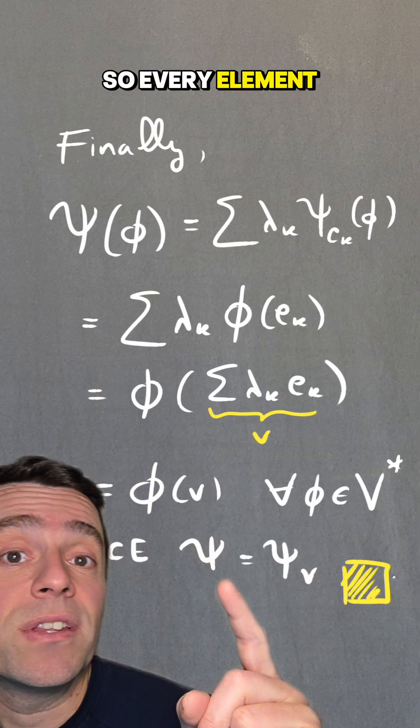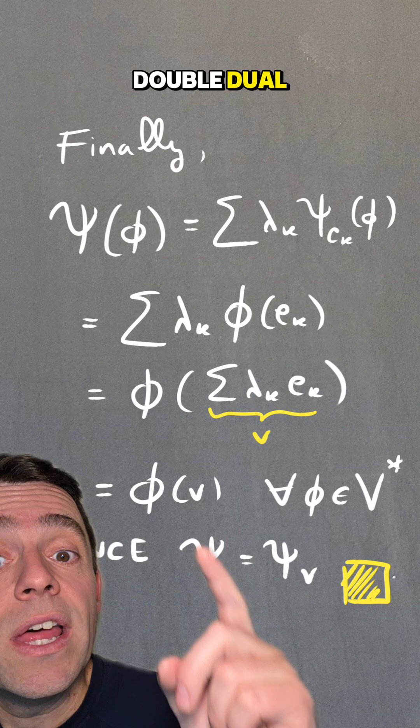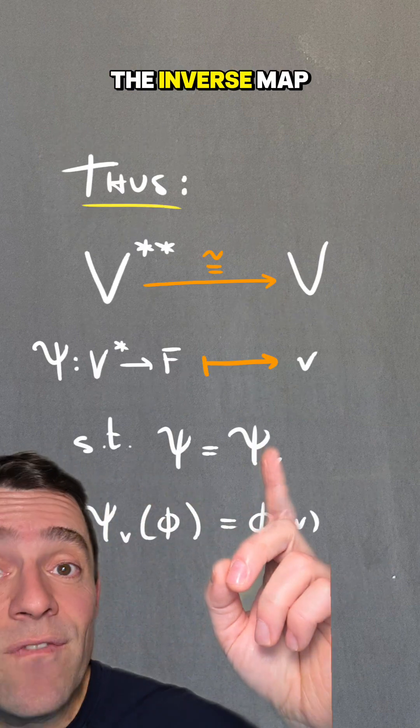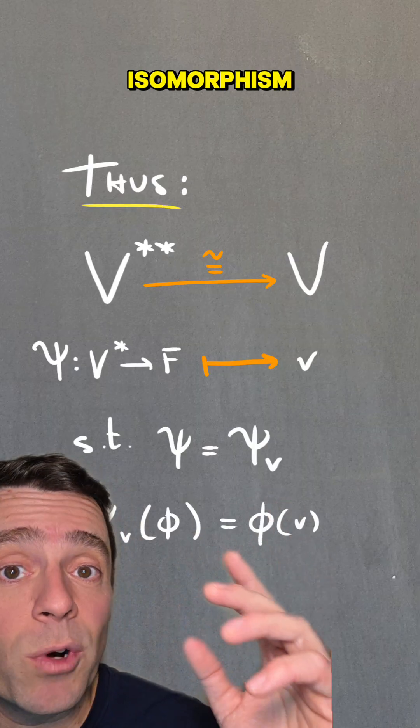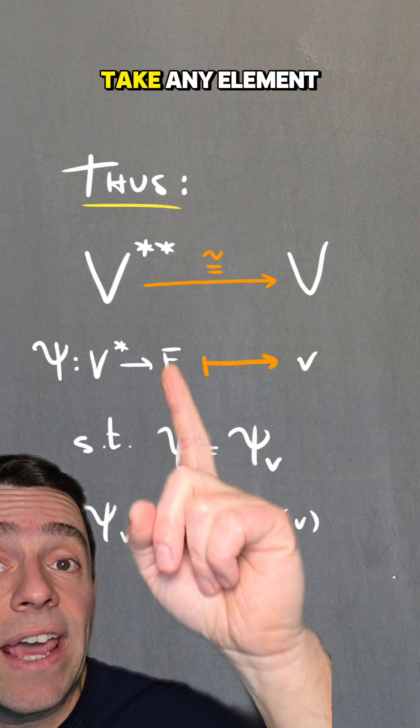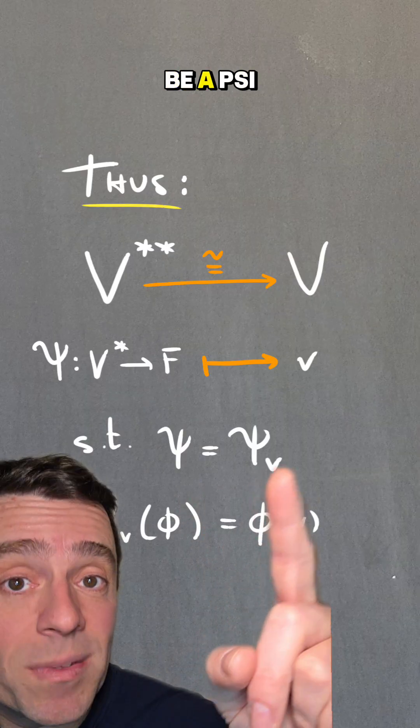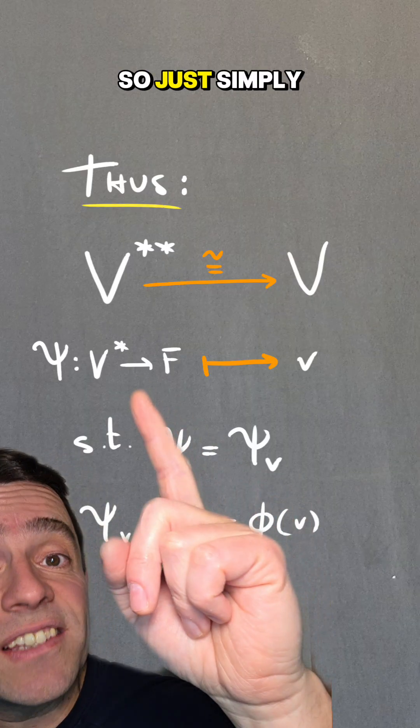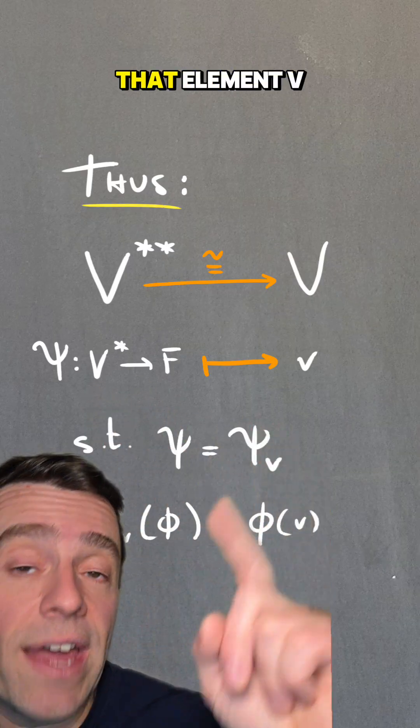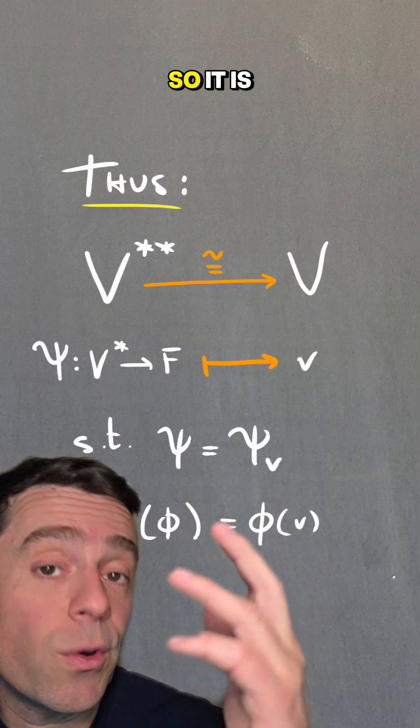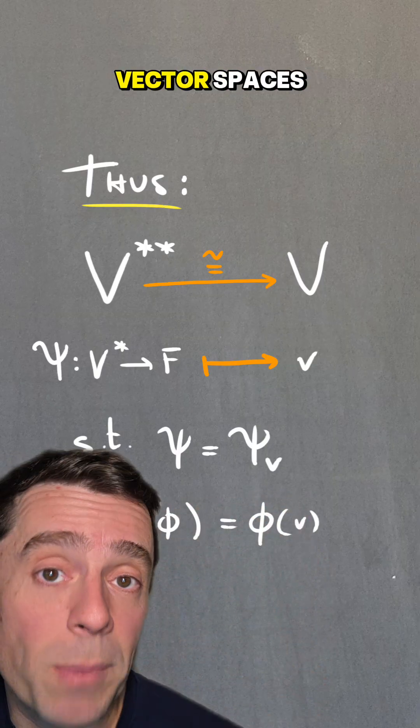So every element ψ in the double dual is one of these ψ_v. And therefore, the inverse map to that canonical isomorphism goes as follows. Take any element from the double dual that has to be a ψ_v, so just simply send ψ to that element V. And you can show that this is a linear map, and it's injective-surjective, so it is an isomorphism of vector spaces.